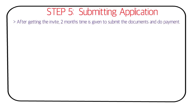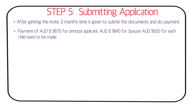Step five is submitting your application. After receiving the invite, you are given two months to submit the application, documents, and payment. Previously it was three months split into two parts, but now it's a combined two-month window. Payment of around 3,670 Australian dollars is required for the primary applicant — half that for a spouse, and one-quarter for each child.